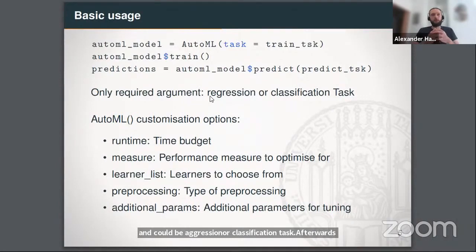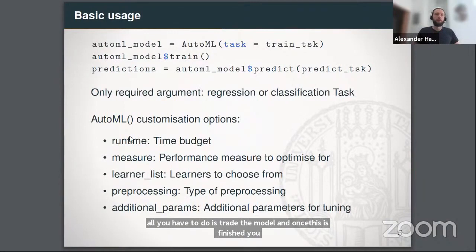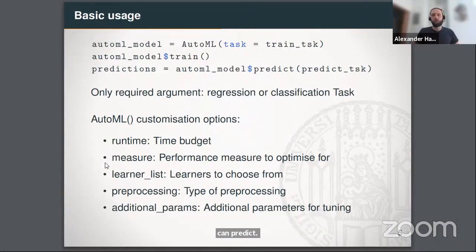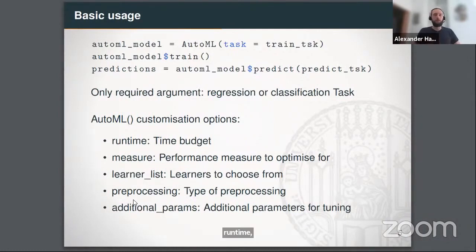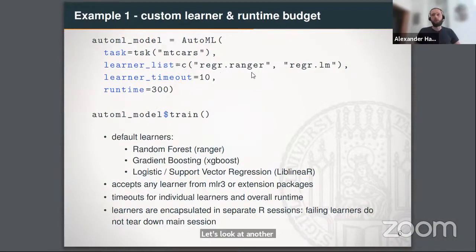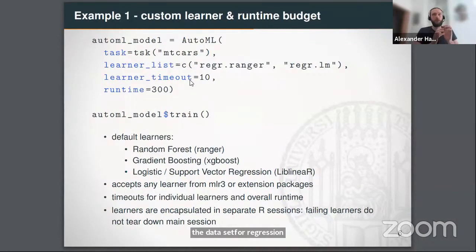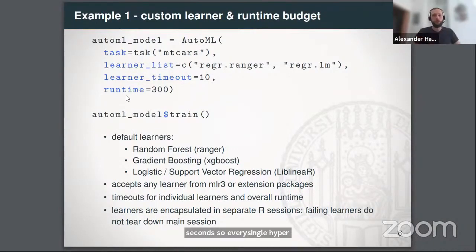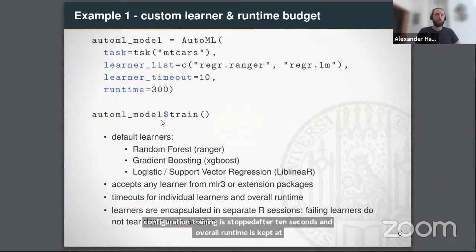The AutoML interface function comes with different customization options: a runtime setting, a custom performance measure to optimize for, selectable learning algorithms, control over preprocessing type, and additional parameters. In the second example, I use the MTCAST dataset for regression with a random forest from the Ranger package and linear models. The learner timeout is set to 10 seconds per configuration, and overall runtime is capped at 300 seconds.